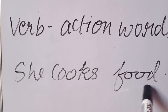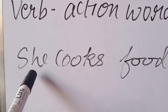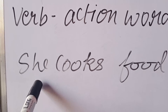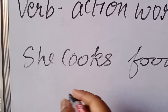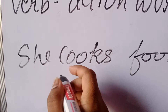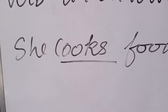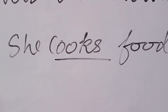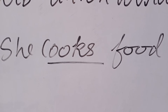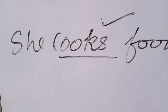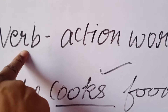Next example: 'She cooks food.' Here we are talking about a girl or a woman who is a single person. She cooks — 'cooks' means cook in Hindi. So in the sentence 'She cooks food,' the word 'cooks' is our verb. I hope that is clear.